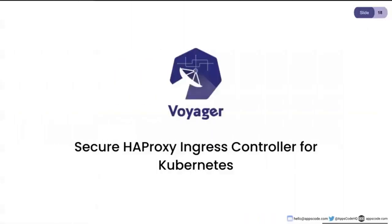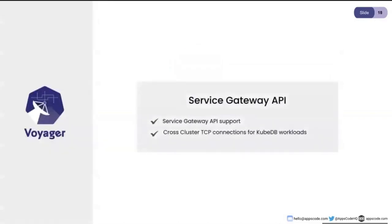We have this Voyager project, which is an ingress controller for Kubernetes. This is actually our first project that we open-sourced, back in late 2016. Right now the project is pretty stable — the ingress CBA has been stable and used in production in various places.